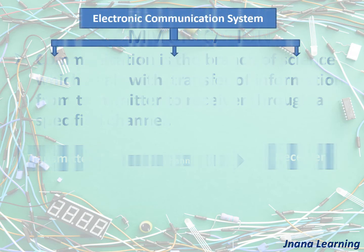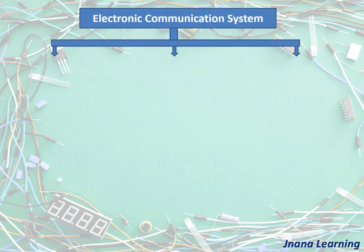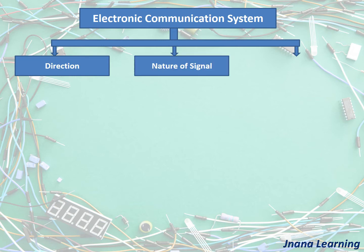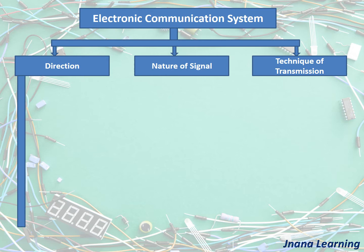The electronic communication system can be broadly classified into three categories: first, based on direction; second, based on the nature of the signal; and third, based on the technique of transmission.